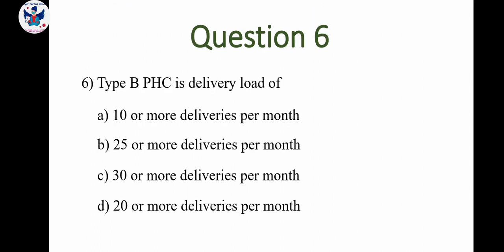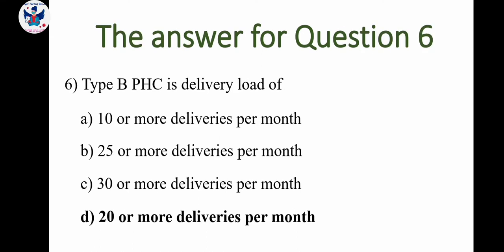Next question: Type B primary health center has a delivery load of — A: 10 or more deliveries per month, B: 25 or more deliveries per month, C: 30 or more deliveries per month, D: 20 or more deliveries per month. The correct option is 20 or more deliveries per month.